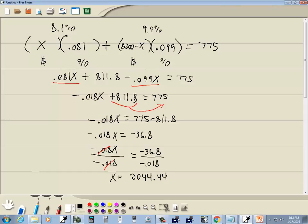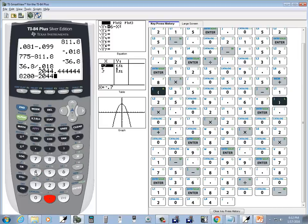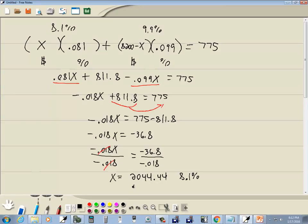And this is for X, which is our 8.1% account. So that's how much is in that account. Now total, there's a total of $8200. So I'm going to give us 6155.56 for our 9.9% account. And those are our two amounts.